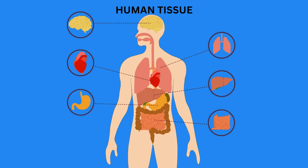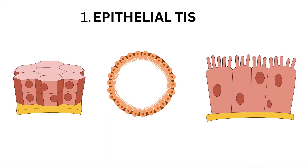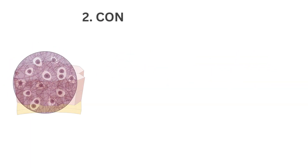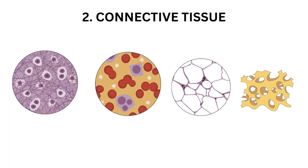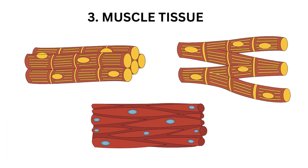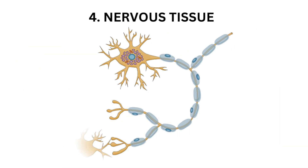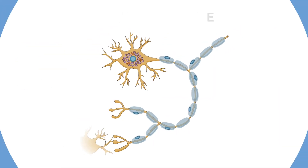There are four primary types of human tissues: 1. Epithelial tissue, 2. Connective tissue, 3. Muscle tissue, and 4. Nervous tissue.